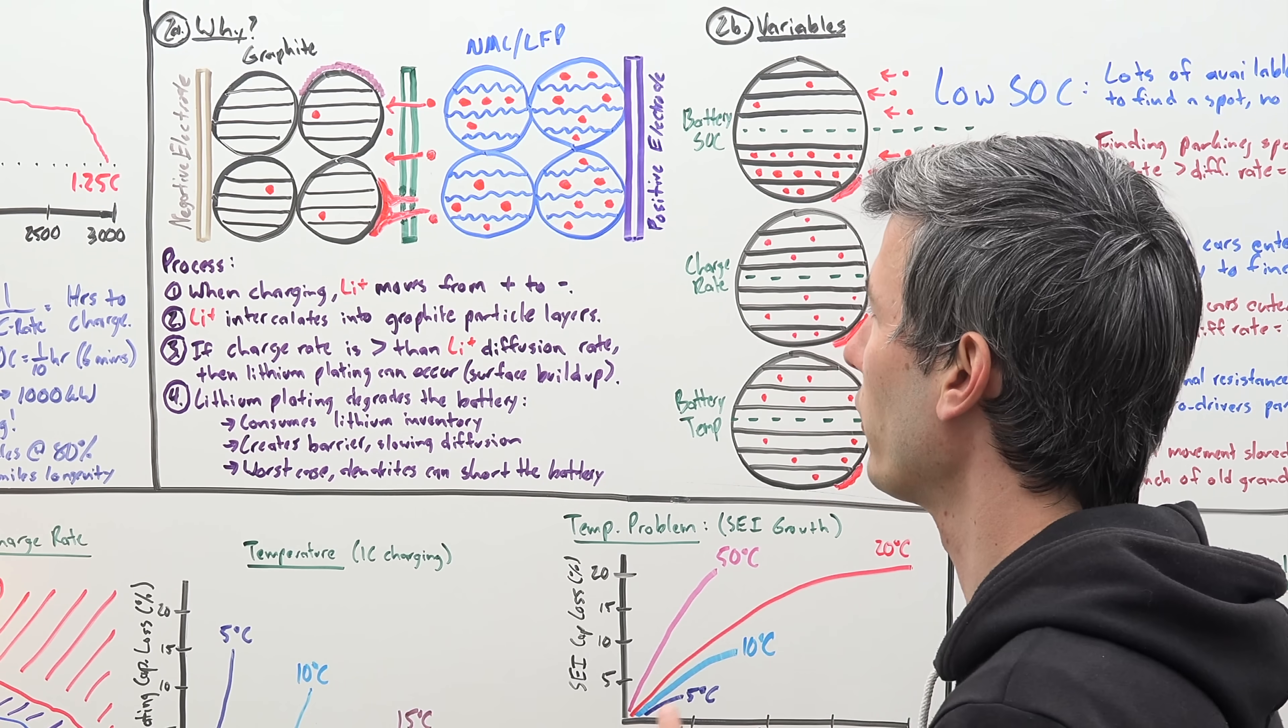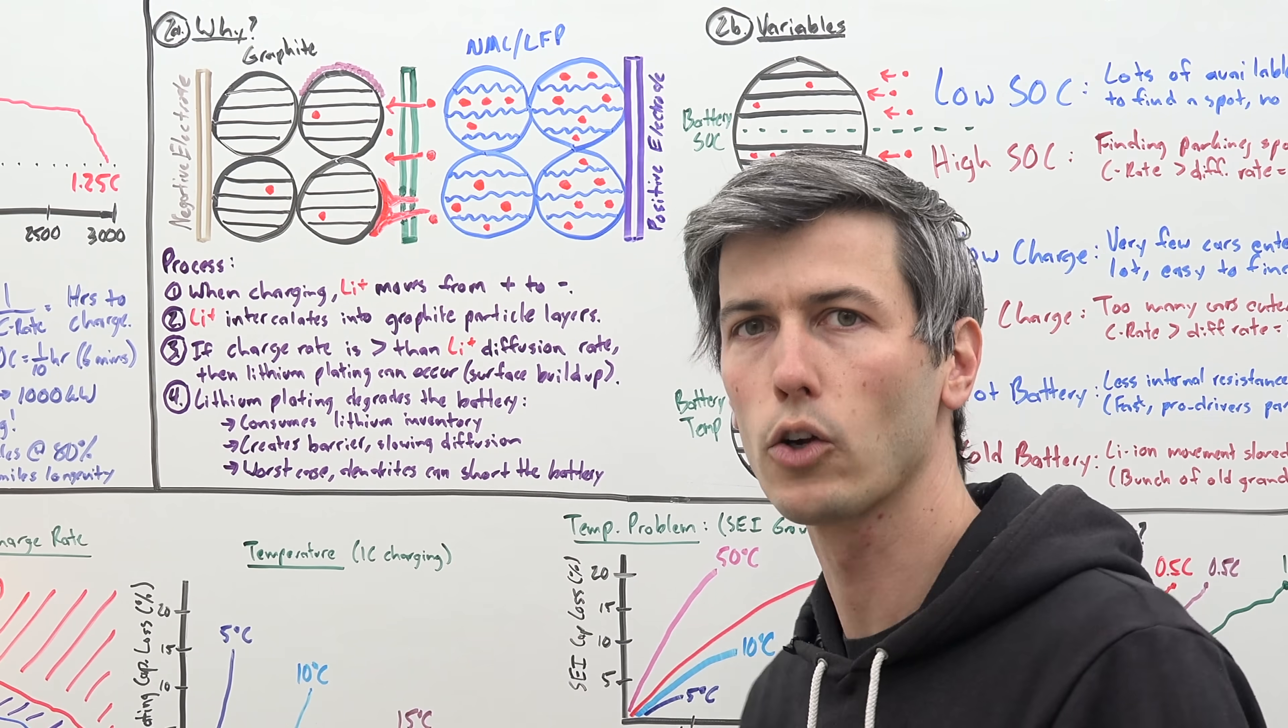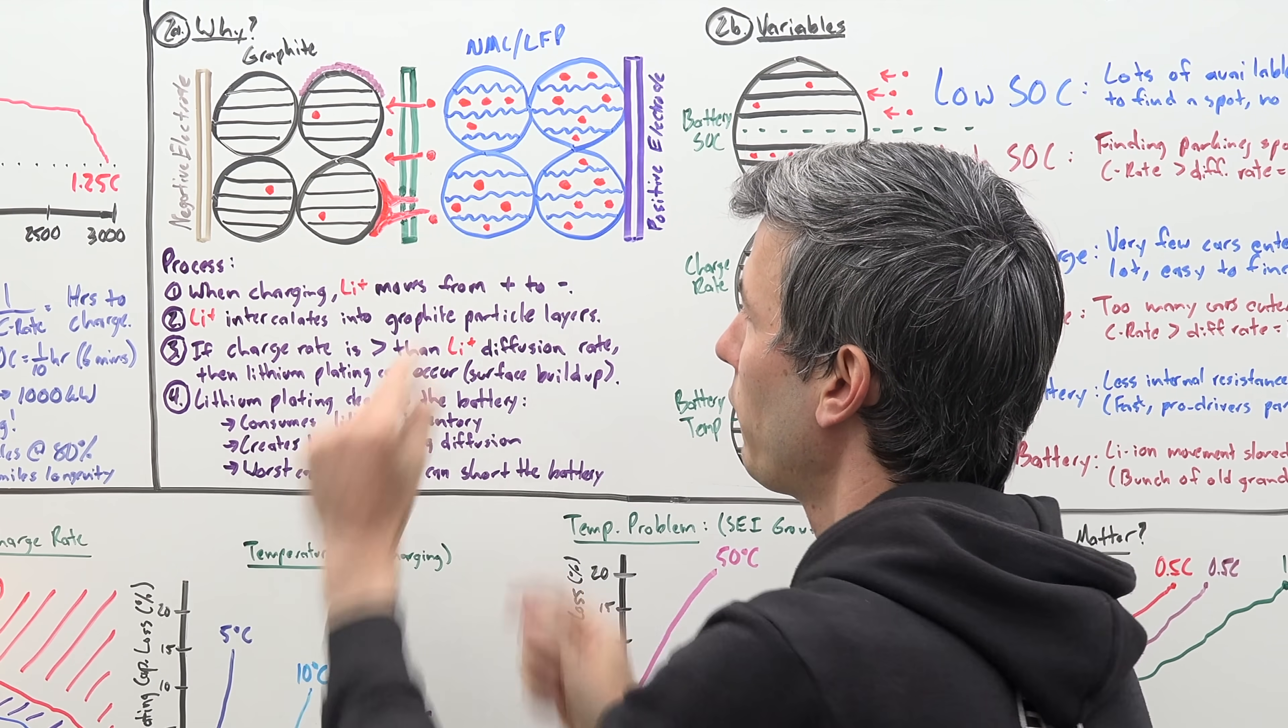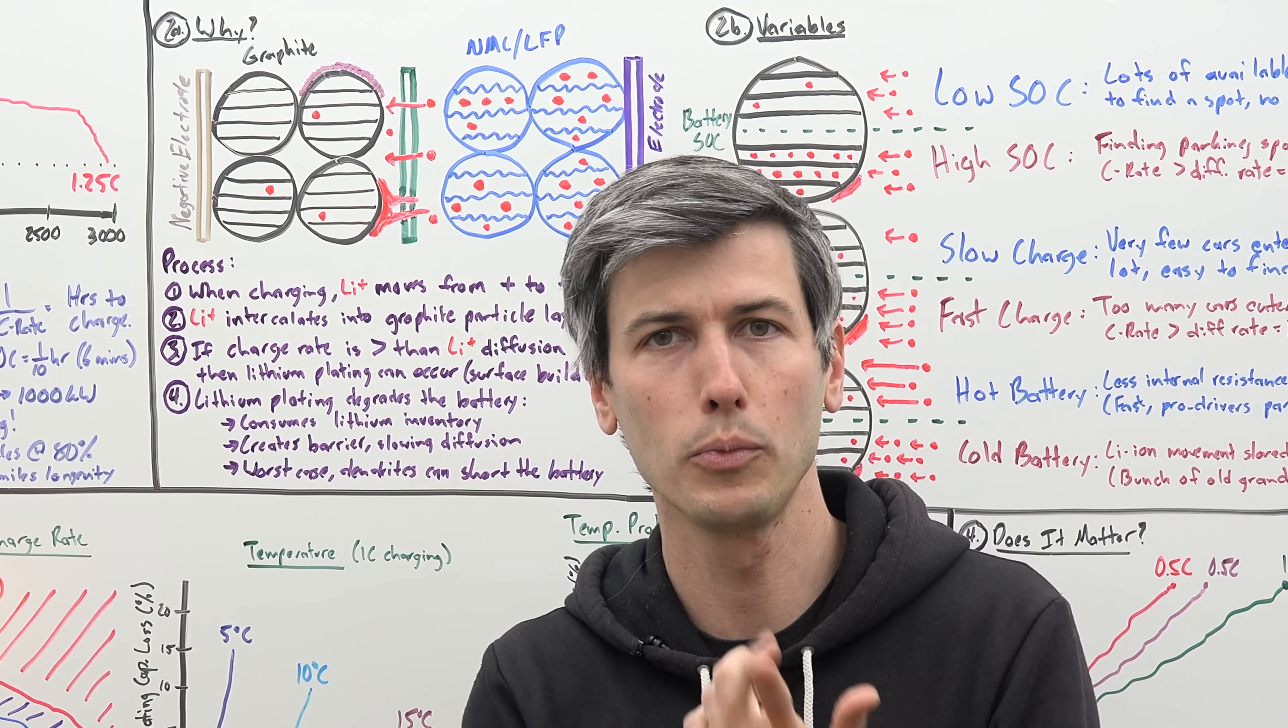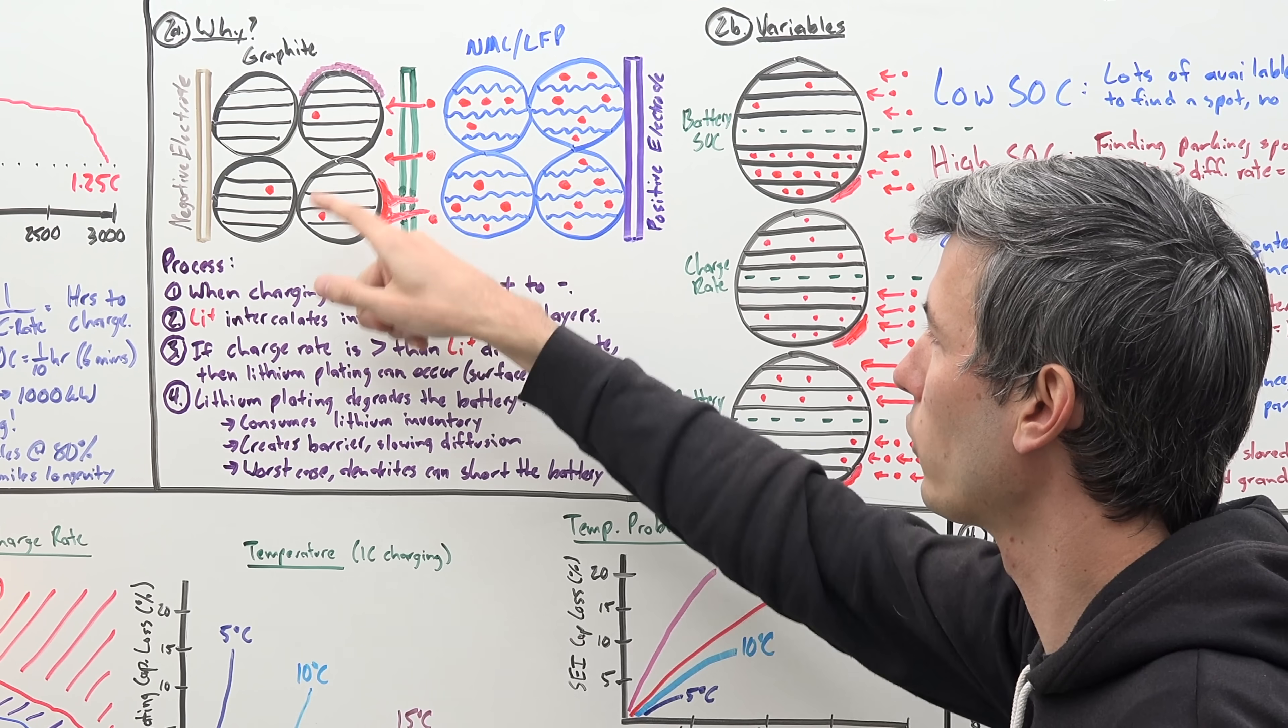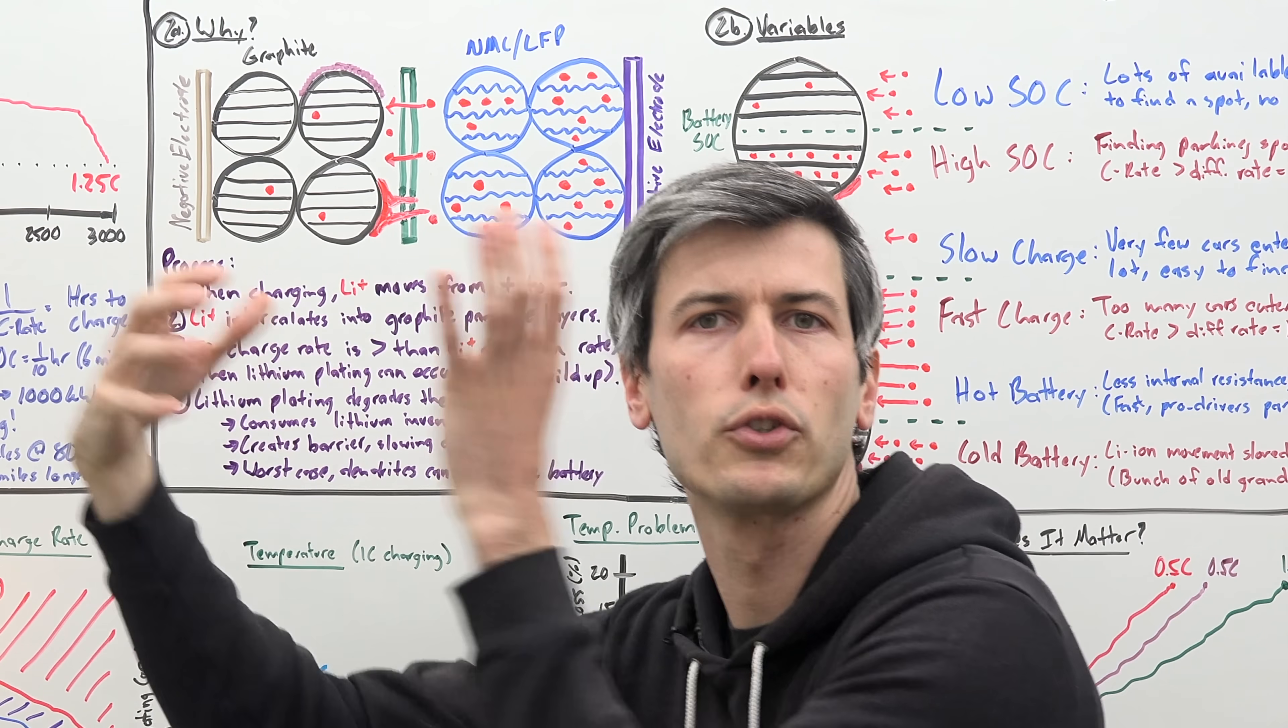Now, if the rate that you're charging is too fast, that means you're throwing all kinds of these lithium ions over to the other side, and they can't find a parking spot fast enough within these graphite particles. So instead of diffusing within the particles, they build up on the outside of the particle, if your rate is too high. Now, why is that a problem? Well, first of all, this consumes lithium inventory, which means you have less lithium to deal with, which means your battery has degradation. That also creates a barrier on these graphite particles, meaning it's harder for those lithium ions to find themselves a parking spot and diffuse within. So the problem just compounds.